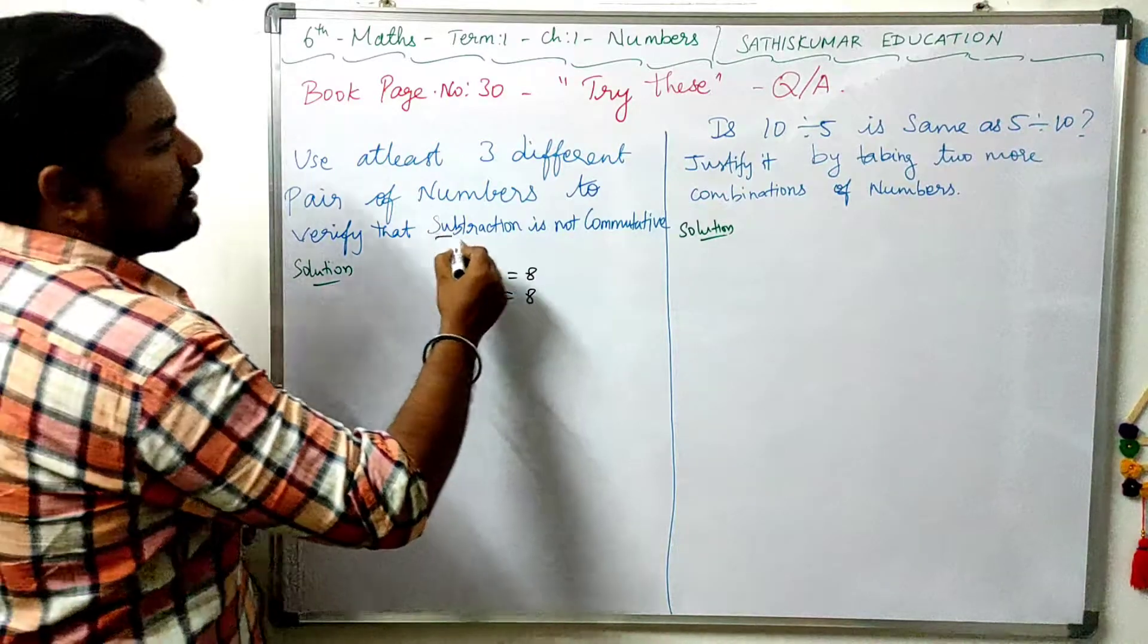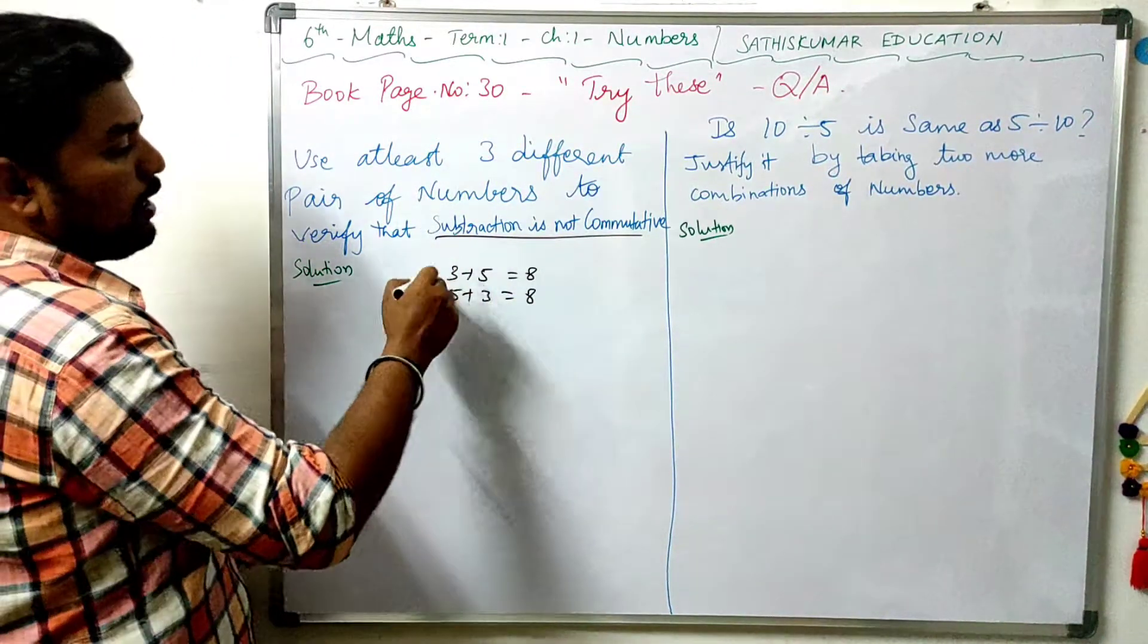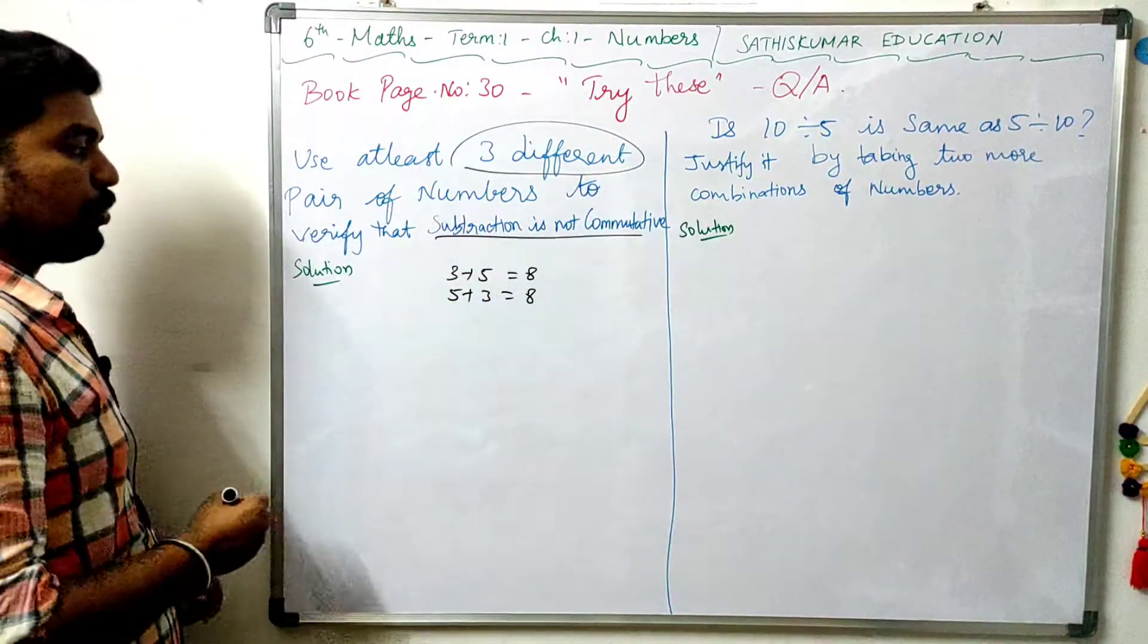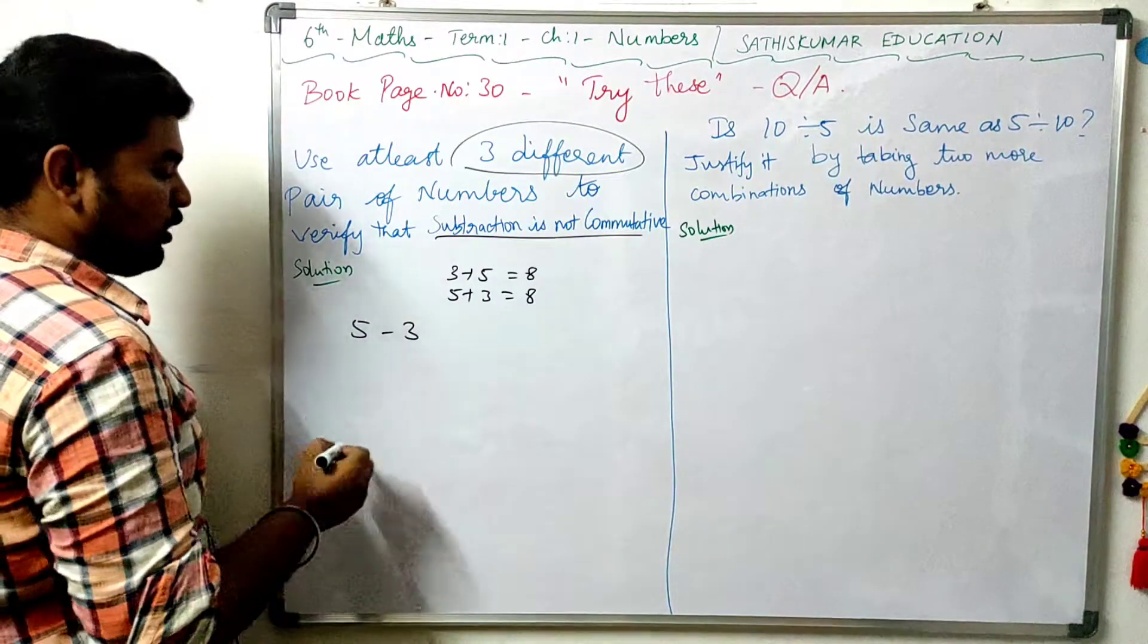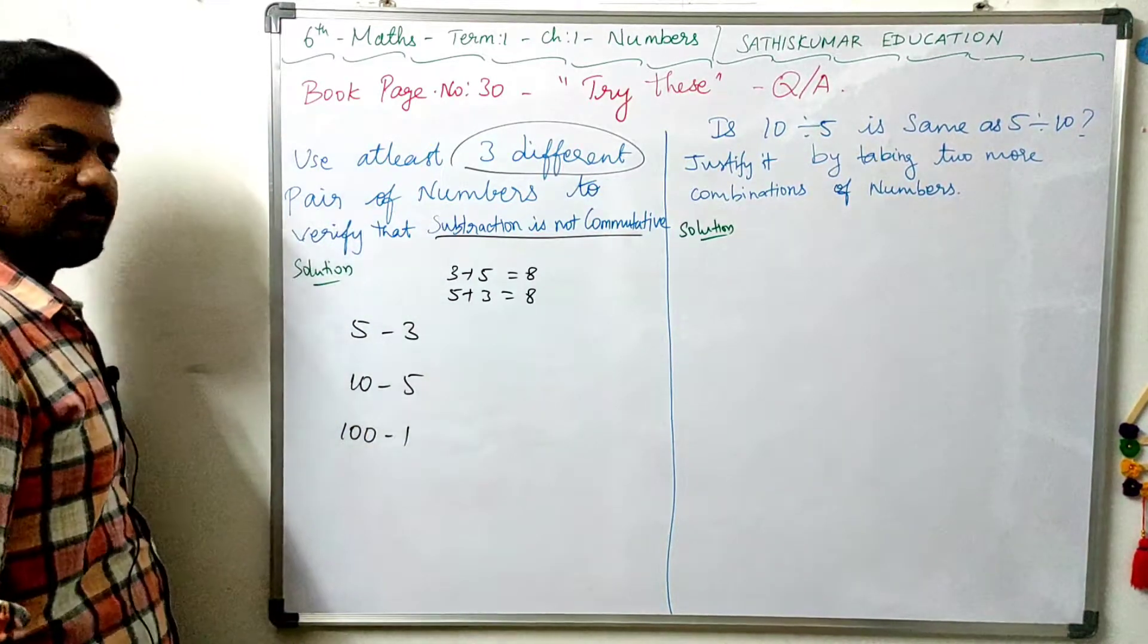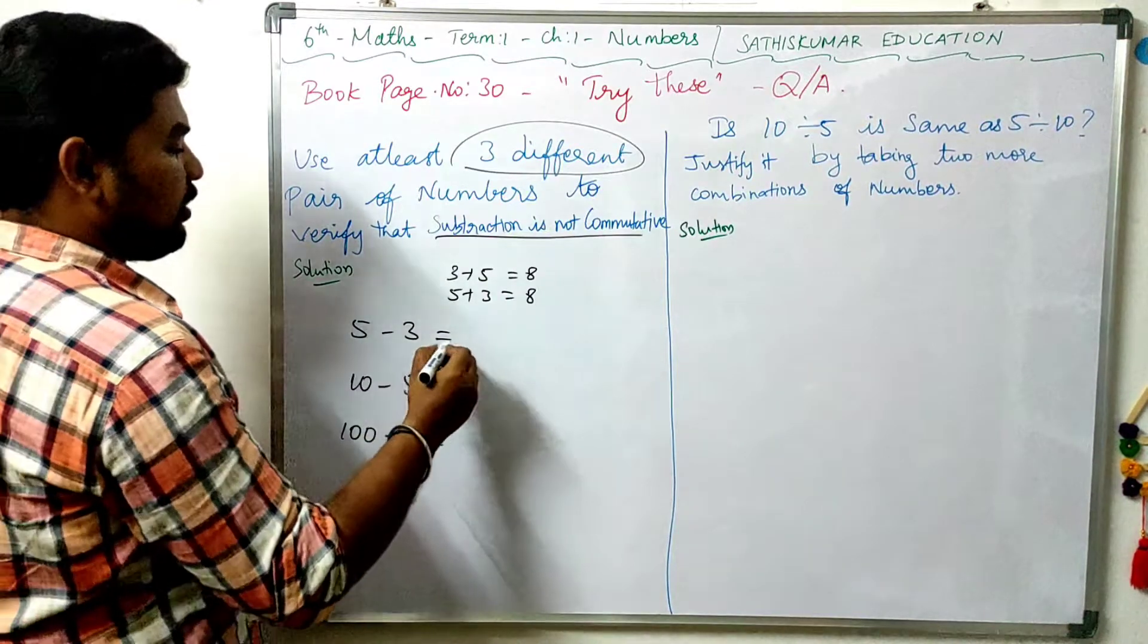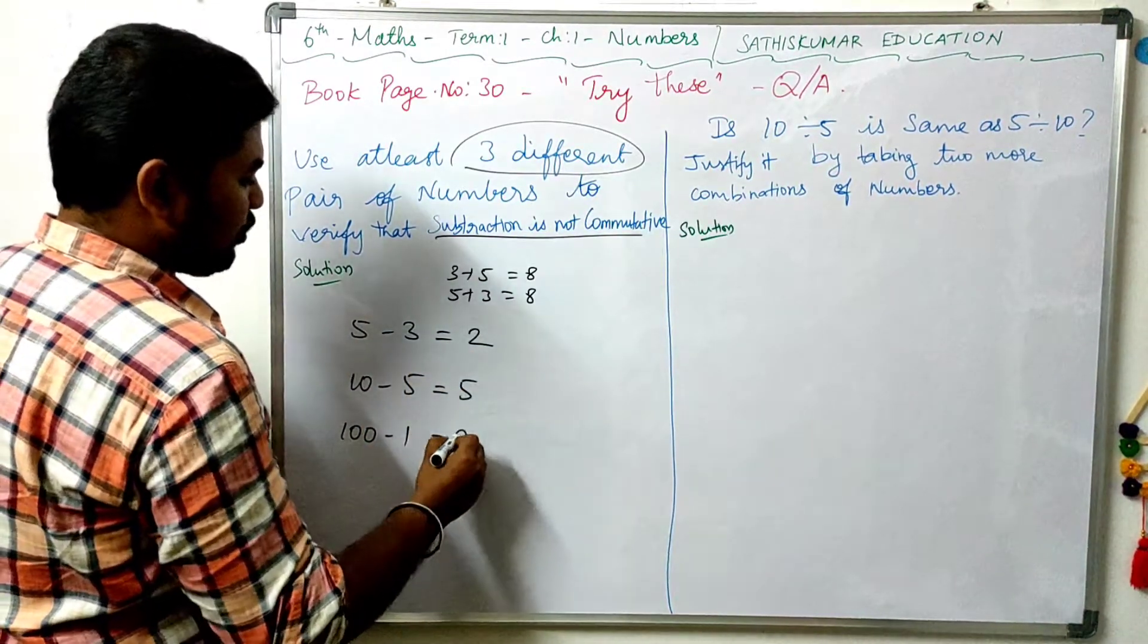If subtraction is commutative, we will prove how many pairs are. For example, 5 minus 3, 10 minus 5, 100 minus 1. Let's go. 5 minus 3 is 2, 10 minus 5 is 5, 100 minus 1 is 99.